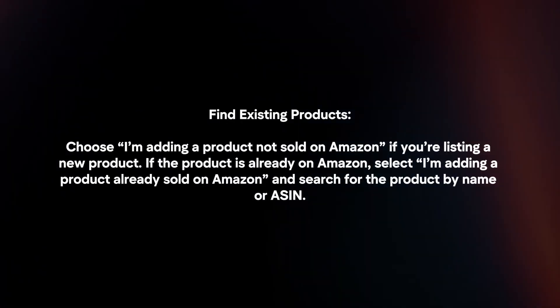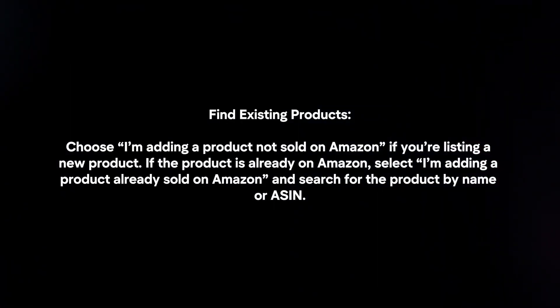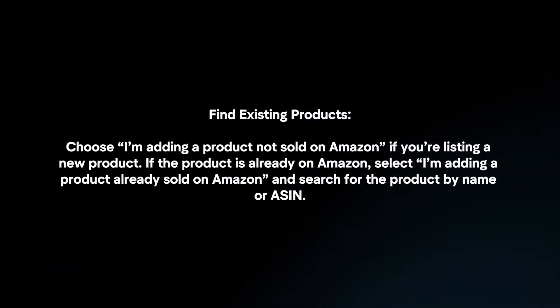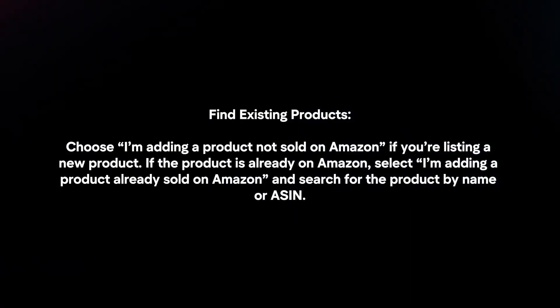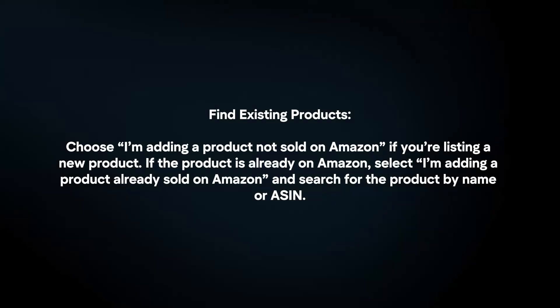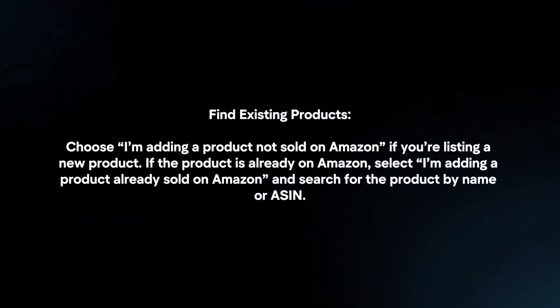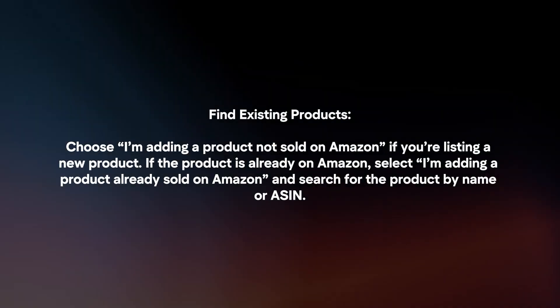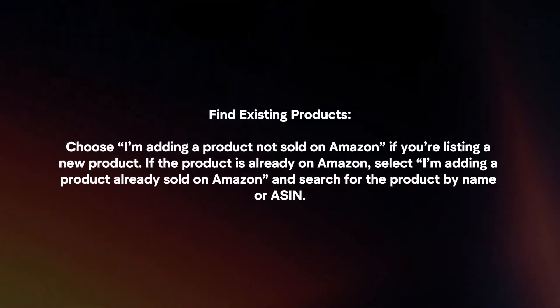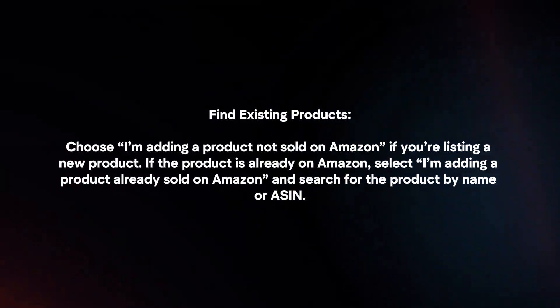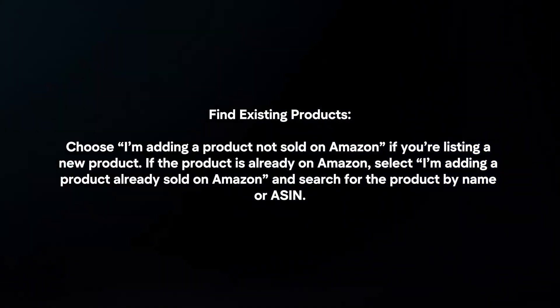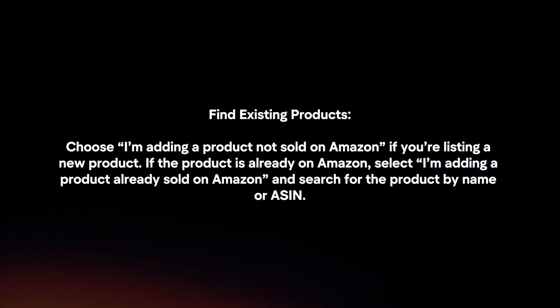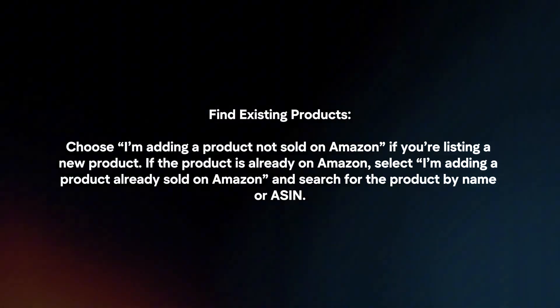Find existing products. Choose the option for listing a new product if it's not yet on Amazon. If the product is already on Amazon, search for the product by name or ASIN.